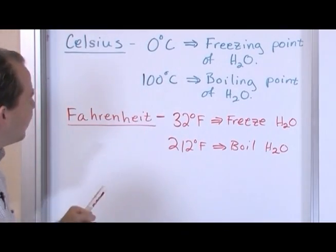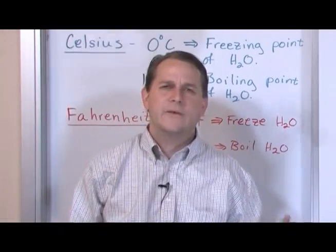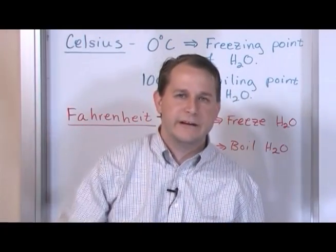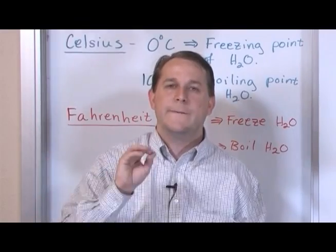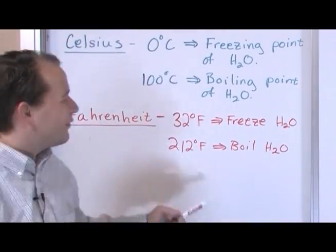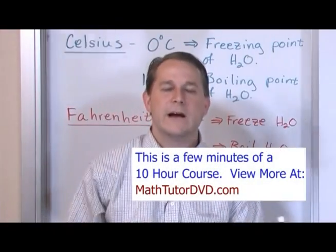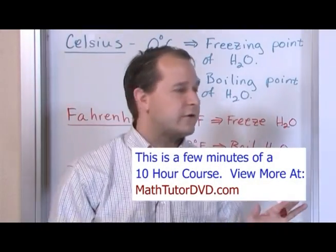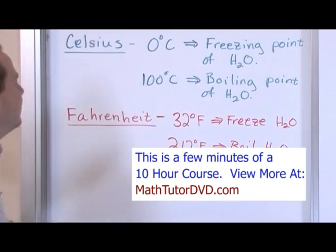Having 32 for freezing doesn't make a whole lot of sense. Why 32? Well, there's history behind it. We could go into the history, but the history doesn't even matter — that's just the end result. Same thing with the boiling point, 212. What's special about 212? There's history behind why it was chosen the way it was chosen. The fact of the matter is Celsius is a much more convenient scale.